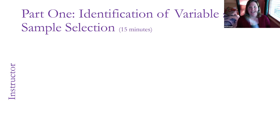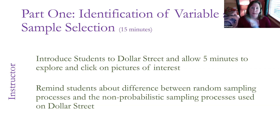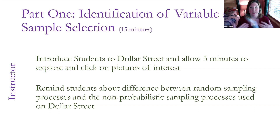For my assignment, I broke it down into three parts. The first part takes approximately 15 minutes, and this is just having students go through Dollar Street, familiarize themselves with it, and identify their variable of interest. After students go on Dollar Street, I show them how to find different variables, and then let them explore on their own. After about five minutes, I ask them to identify a variable they're interested in studying. While they're exploring, I use this opportunity — I'm constantly trying to find ways to remind them and integrate previous concepts. We talk about sampling processes, and Dollar Street represents more of convenient sampling or voluntary response, so we discuss differences between random sampling versus non-probabilistic sampling techniques.